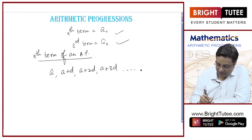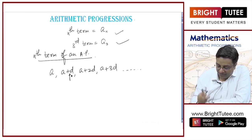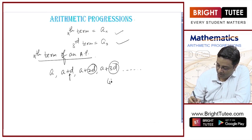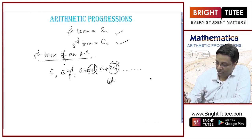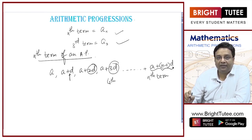We discussed in the first lecture that in second term we have just 1D, in third term we have 2Ds. In fourth term, this is fourth term, we have 3D. So how many Ds will be there in nth term? It will be n minus 1D.